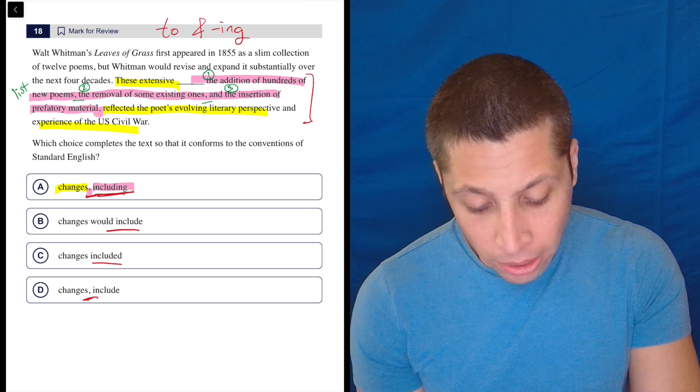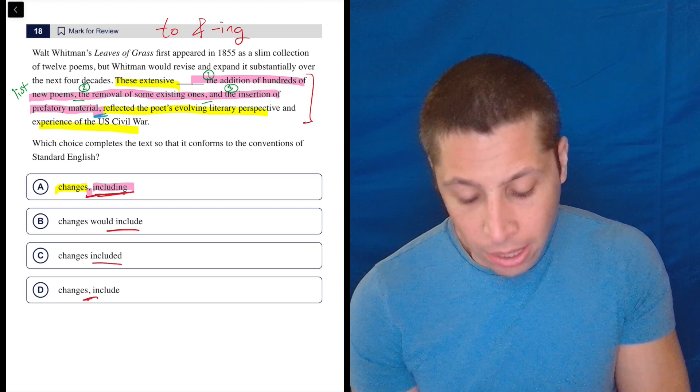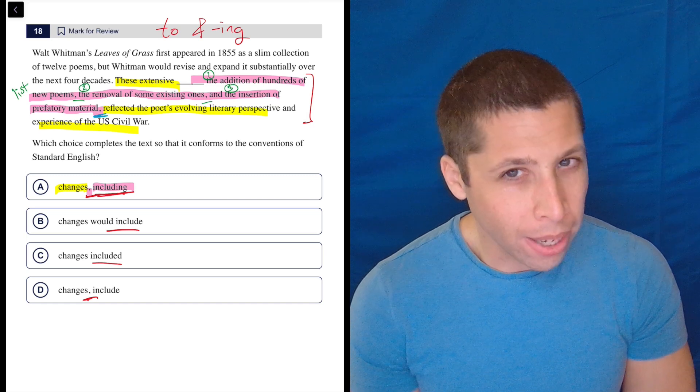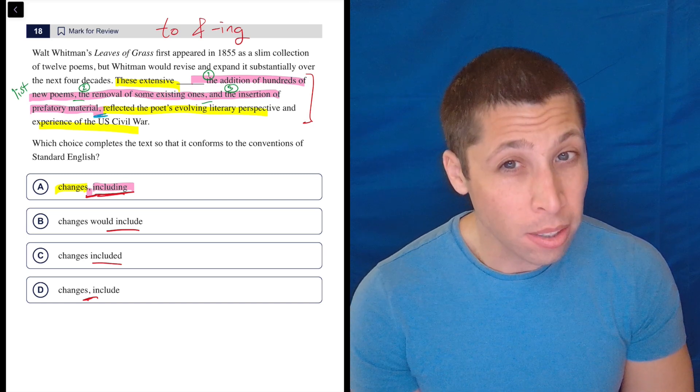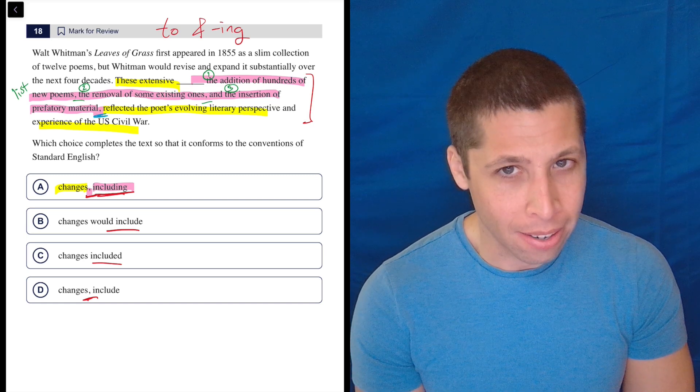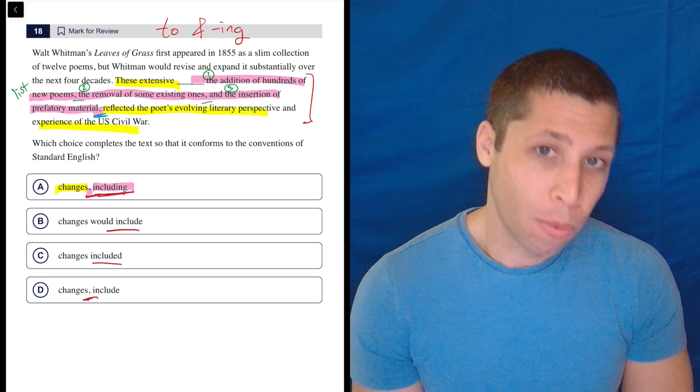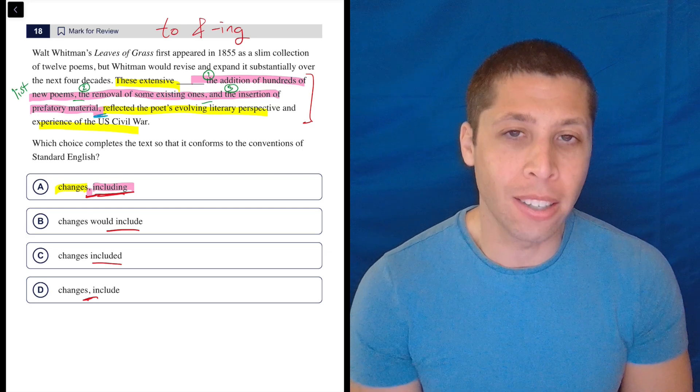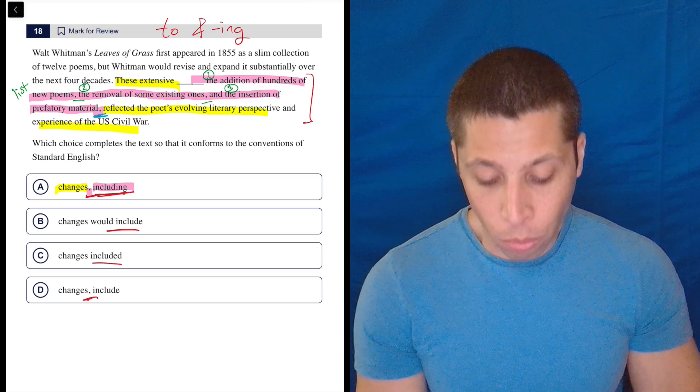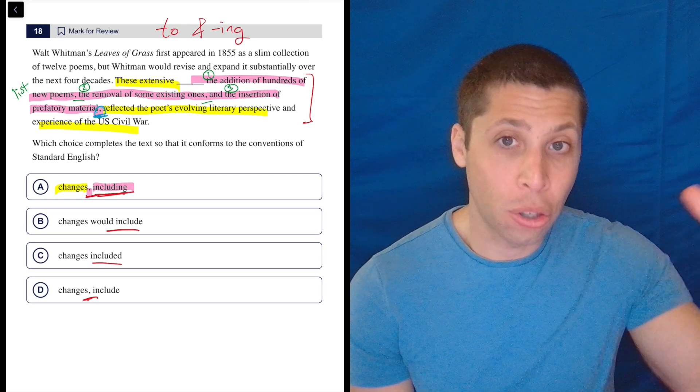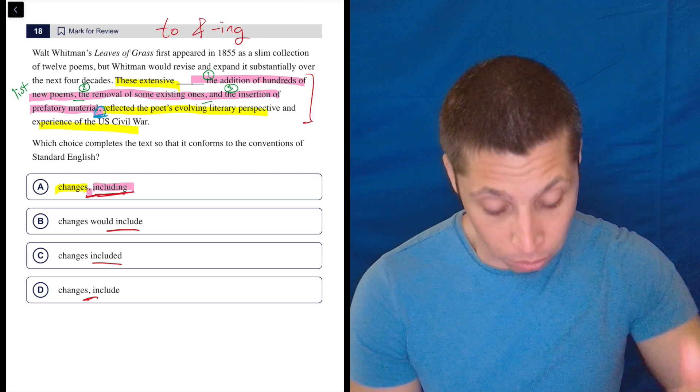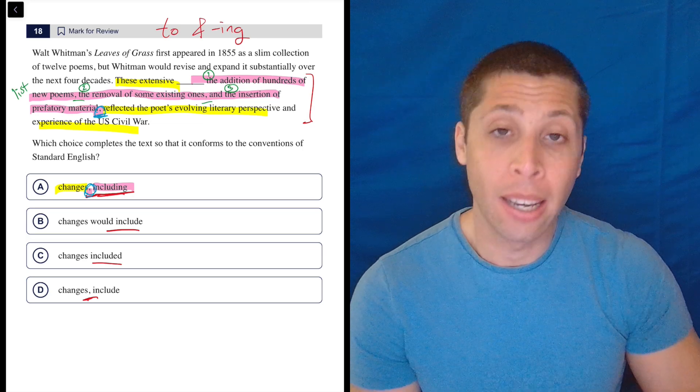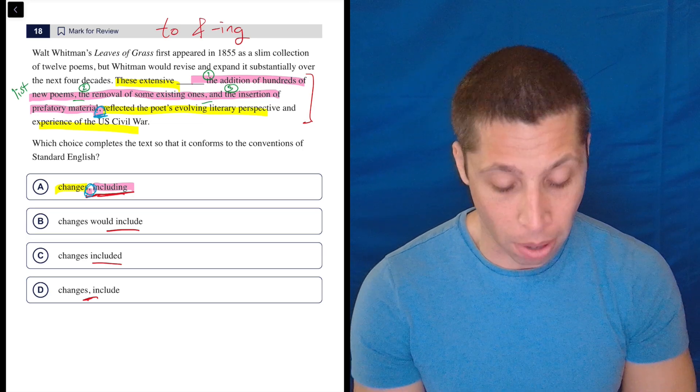But you should be looking at this and going, why is there a comma at the end of the list? We put commas within a list, but why are we putting one at the end? And it's because we are ending the list, which was itself an insertion into the sentence, an interruption. So if we've got a comma at the end to tell us this is the end of the interruption, we need a comma at the beginning to tell us this is the beginning of the interruption.